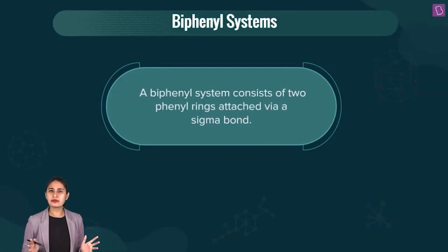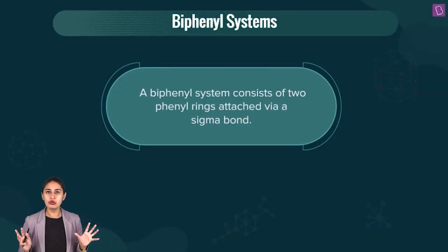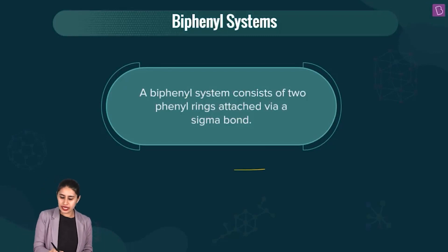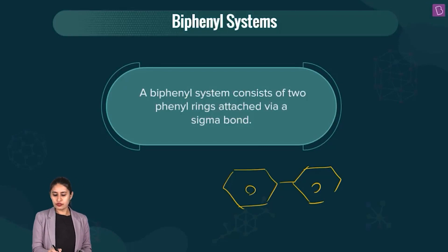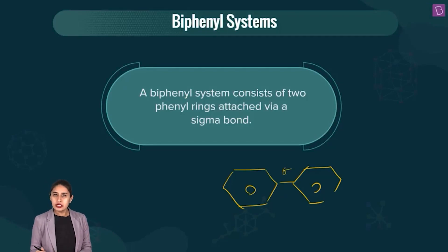For biphenyl, the name suggests two phenyl rings attached like this. It consists of two phenyl rings attached via a sigma bond.